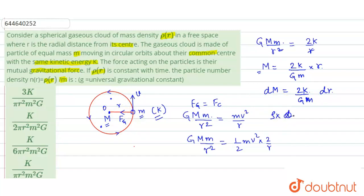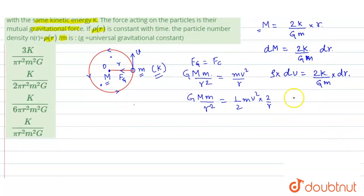Now in place of dM what we can write, we can write density times dV. So the gaseous cloud of thickness dr, volume will be simply equals to area times thickness, surface area times thickness. So surface area is 4 pi r squared times thickness dr, so this will be the elemental volume, and this will be equals to 2k dr divided by G small m.